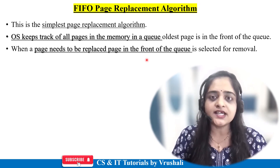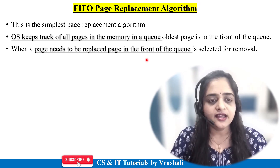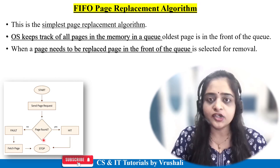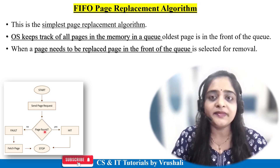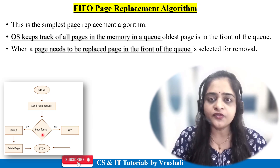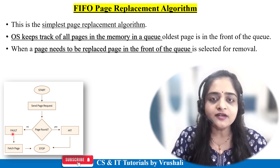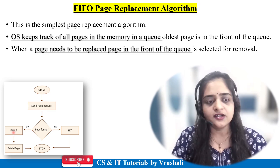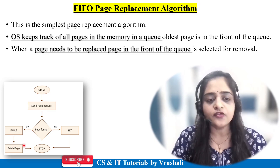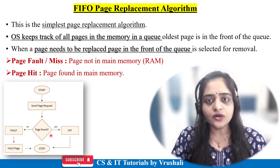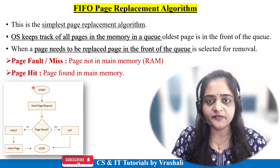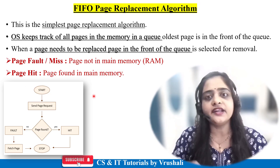When the CPU demands a page and RAM is full, the operating system removes the first page that was added to the queue in main memory — the page added first is removed first. Looking at the flowchart: if the CPU demands page 4 and page 4 is present in main memory, that is a page hit. If page 4 is not present, a page fault occurs and the OS fetches the page from secondary memory.